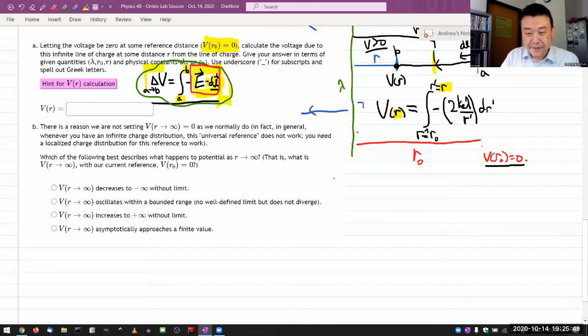Okay, so voltage at the distance R is, oh, that's an easy integral. That's just the natural log. So let me pull out all the constants. It's minus 2kλ. Those are all constants. And what my integral is, R prime going from R equals R0 to R, and the integrand is 1 over R prime, dR prime. That's just natural, the antiderivative for that is just the natural log of R prime.